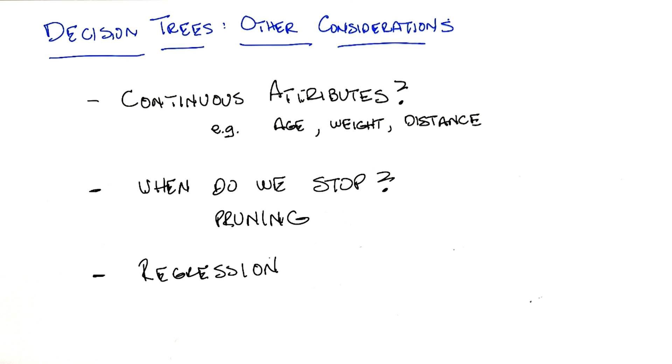How would we have to adapt decision trees to do that? Any ideas, Michael? So these are now continuous outputs, not just continuous inputs.